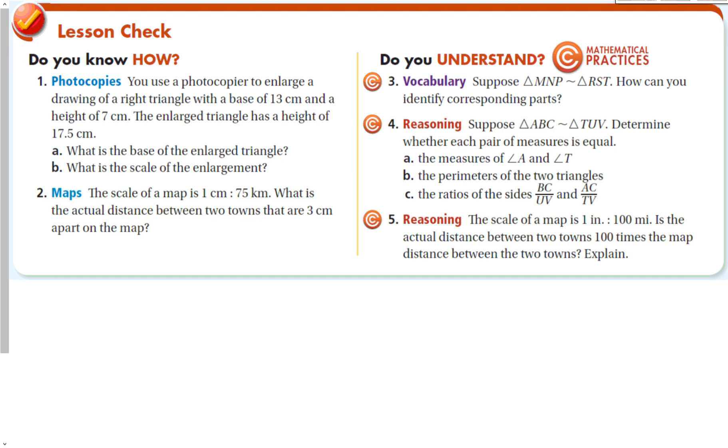Suppose triangle ABC is similar to TUV. Determine whether each pair measures equal. A and T - yeah, look, they're in the same place. The perimeters of the two triangles - absolutely not, because these two triangles are not congruent, they are just similar. If it said congruent, then the two perimeters would be equal. The ratio of side BC and UV - those match up, that's good. AC and TV - yeah, those match up, those are good.